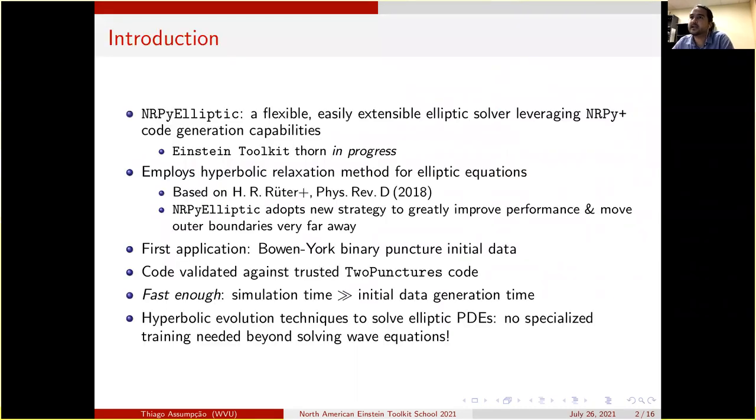NRPyElliptic is a flexible, easily extensible elliptic solver leveraging NRPy code generation capabilities. It has a standalone version, and also we are developing a nice Einstein Toolkit thorn. It employs the hyperbolic relaxation method for elliptic equations described by this paper here. NRPyElliptic adopts a new strategy to greatly improve performance and move outer boundaries very far away.